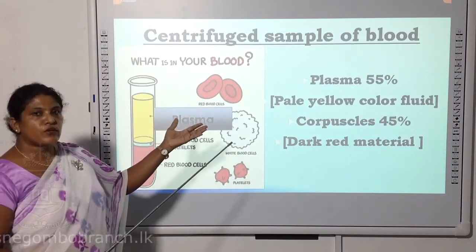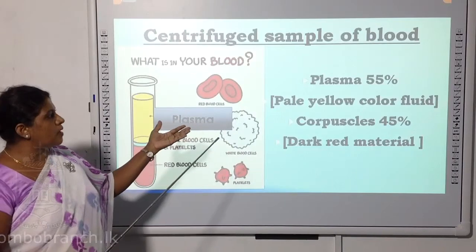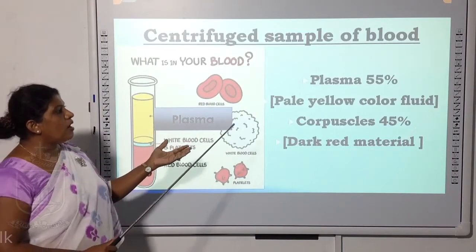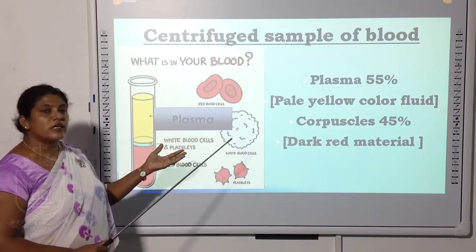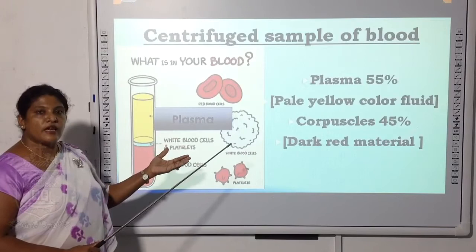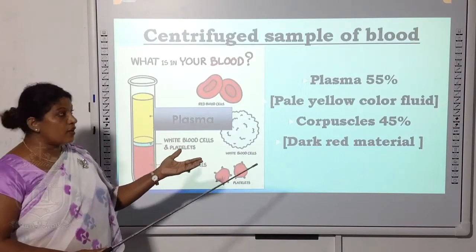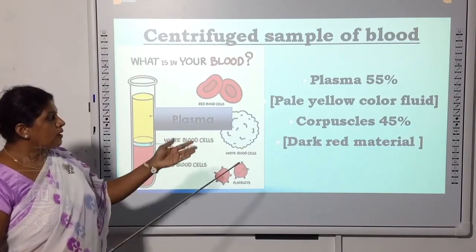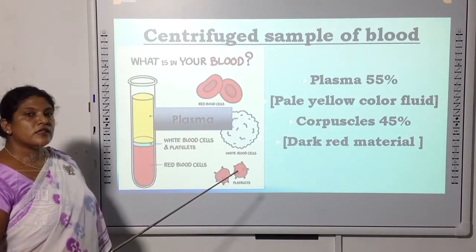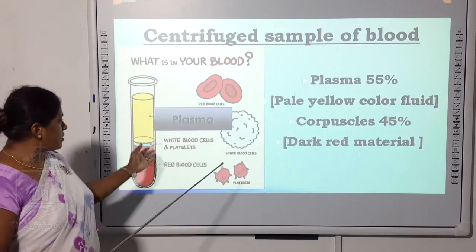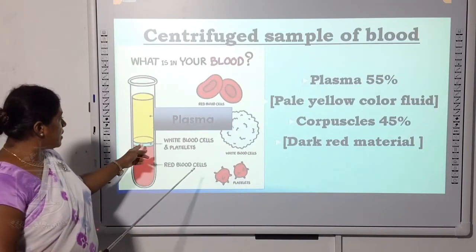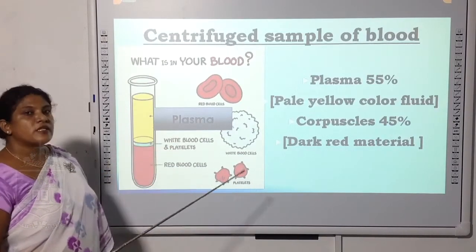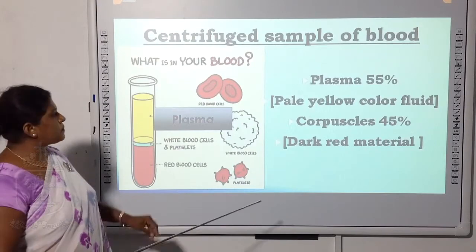If you look at the percentages of each component: plasma is a pale yellow color fluid and makes up 55% of blood. Corpuscles are dark red in color and make up 45% of blood.